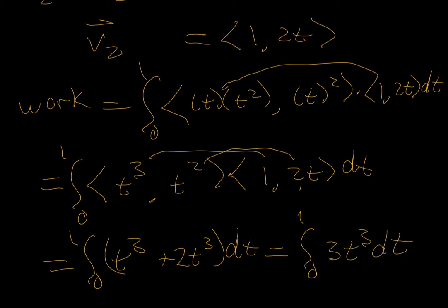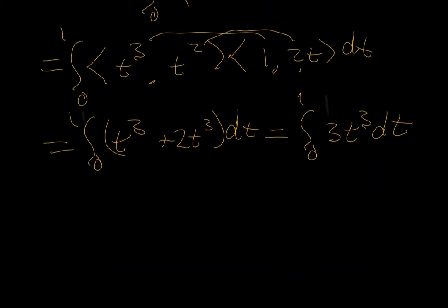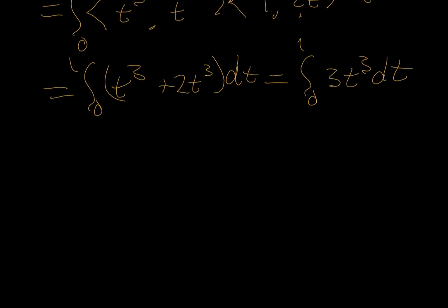I'm going fast intentionally because these busy algebraic details, you really need to sit down and process through them. And we've done many, many, many of these in class. So I'm highlighting, kind of like the solution manual does. Let's scroll a little bit further up here. The antiderivative is going to be 3t to the 4th divided by 4, evaluated from 0 to 1. This gives us 3 fourths.